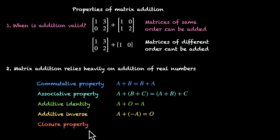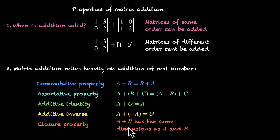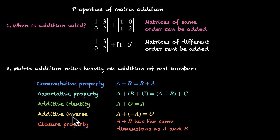Finally we have the closure property. For real numbers, closure property says that if you add two real numbers, you will get a real number — you cannot get anything else. For matrices, it's slightly different: closure property says that if you add two matrices of the same dimensions, their sum will be of the same order as well. So if you add a two by two to a two by two, the sum will also be two by two.